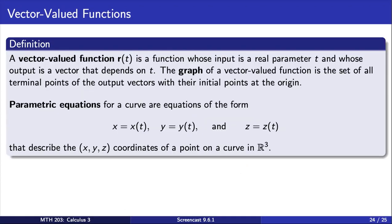A vector-valued function is a function whose input is a real parameter t and whose output is a vector that depends on t. The graph of a vector-valued function is the set of all terminal points of the output vectors with their initial points at the origin.